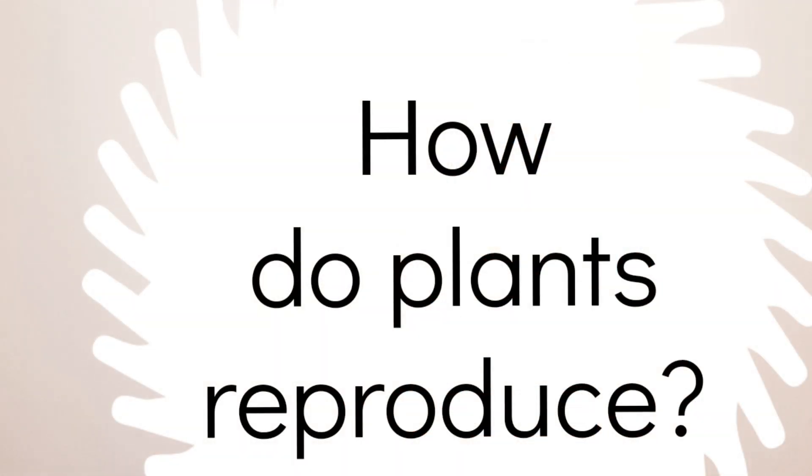If existing plants, animals, or humans do not reproduce, then that particular species will come to an end — it will go extinct. This has happened with dinosaurs, and there have been many plants which have gone extinct. Now, how is reproduction in plants done? Plants can reproduce in a number of ways.